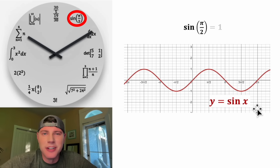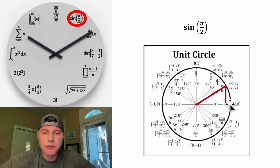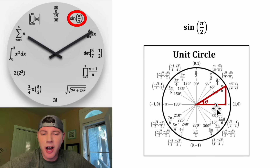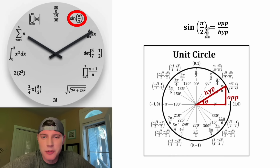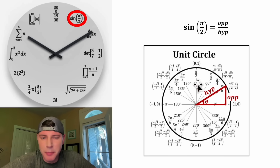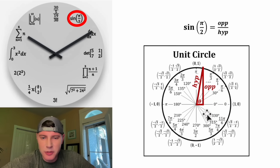But if this feels like cheating, we can do it a different way. We can look at the unit circle instead. Let's draw this right triangle, and let's label this angle theta. The side opposite theta we'll call opposite, and the longest side we'll call hypotenuse. The sine of this angle is defined as opposite over hypotenuse. So sine of pi over 2 is equal to opposite over hypotenuse, where pi over 2 is the central angle theta. Pi over 2 radians is the same thing as 90 degrees.